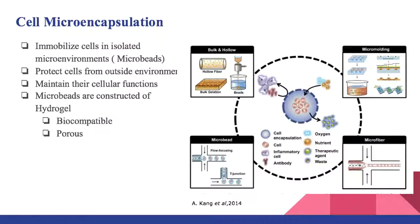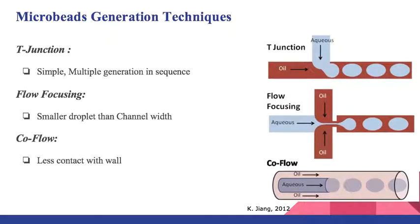Microbeads are generated from a hydrogel material which is biocompatible and porous. Techniques that can be used for microbeads include droplet generation techniques: T-junction, flow focusing, and coflow. T-junction is simple, flow focusing allows us to create small droplets with controlled channel width, and coflow provides less contact with the wall.